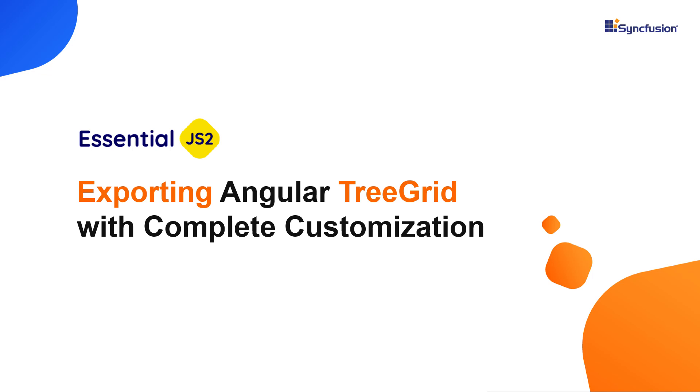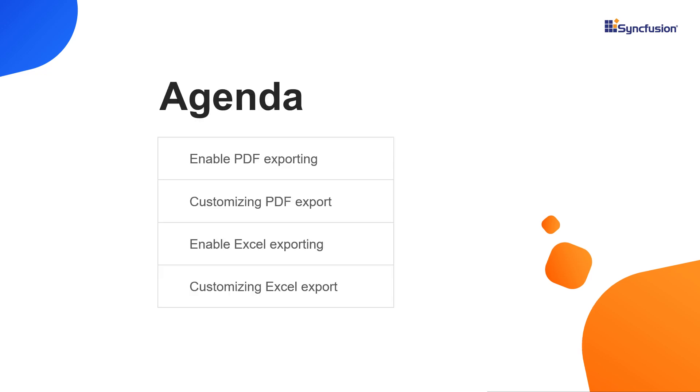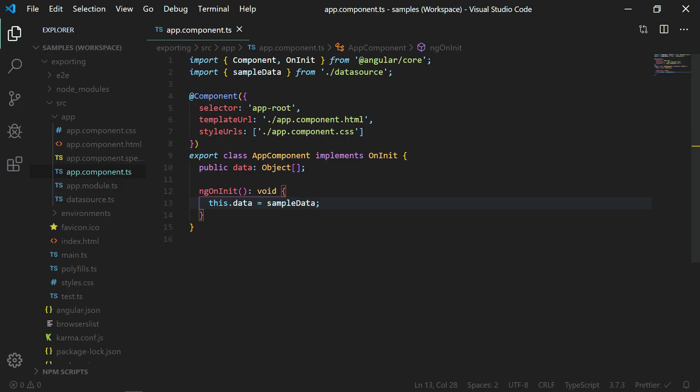Hi everyone, welcome to this video on how to export the Syncfusion Angular tree grid to PDF and Excel formats. I will show you how to enable PDF export and customize the PDF document before exporting, and then how to do the same for Excel exporting. I'm using a sample application configured with all the basic tree grid modules and data. You can download this sample from the description with the label 'try sample'. If you are not familiar with the Syncfusion Angular tree grid, you can watch my getting started video shared in the YouTube card.